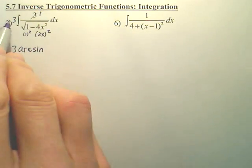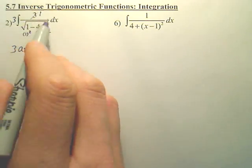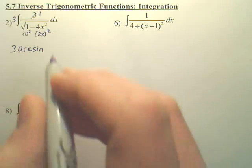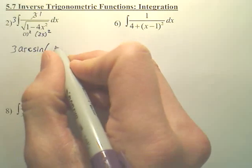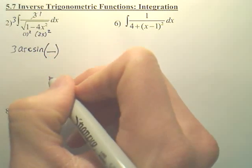And can I just put the 3 out front? Because the 3 is out front, and this whole thing is arcsine. And it's arcsine. And according to the formula, it's going to be u over a.